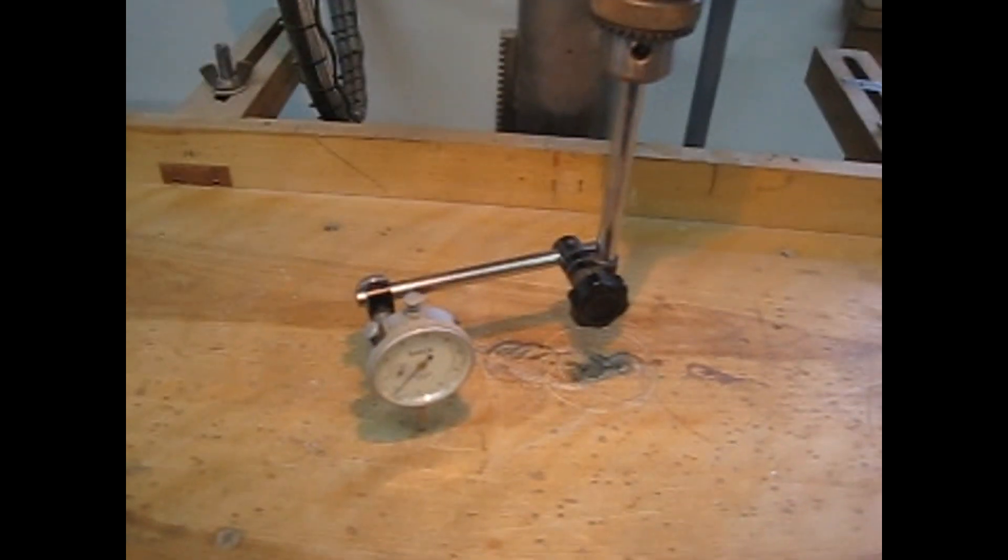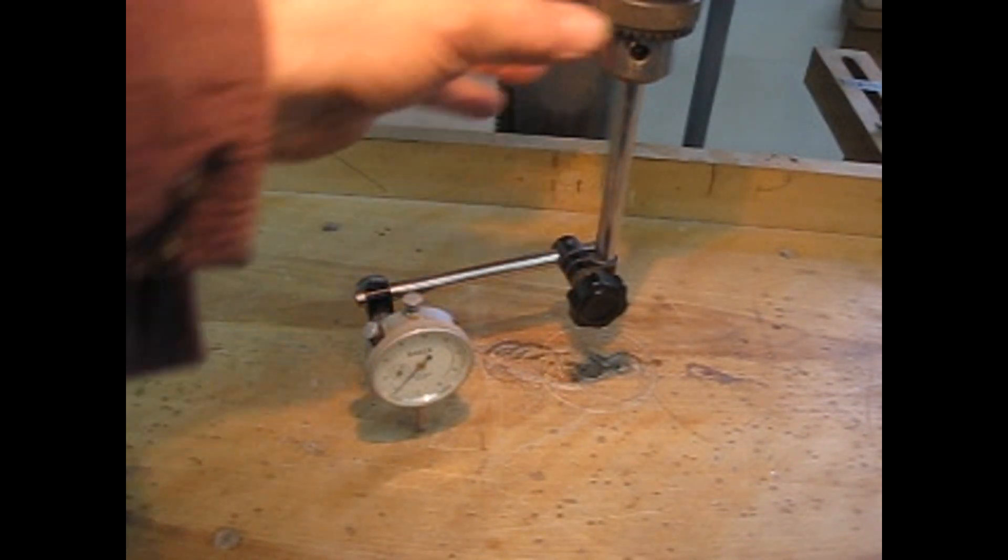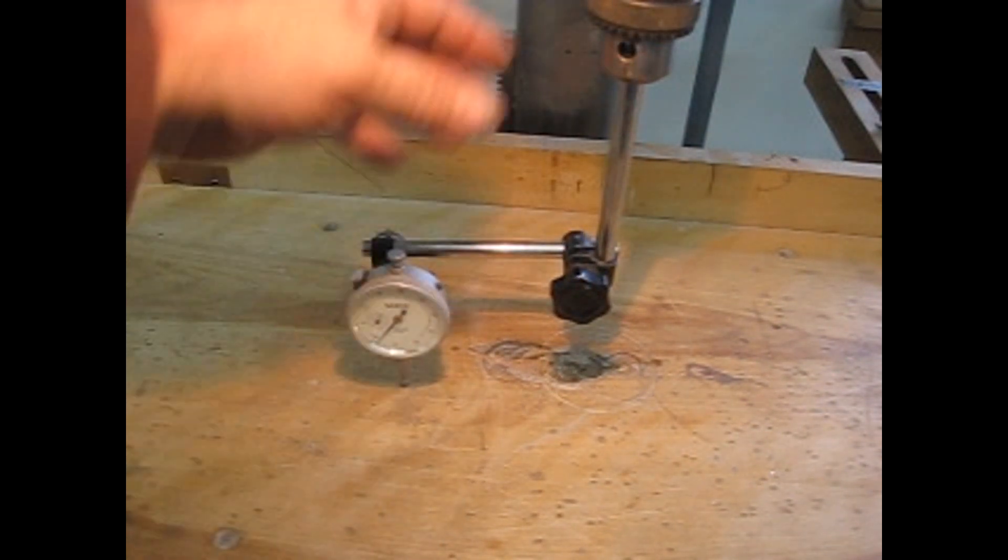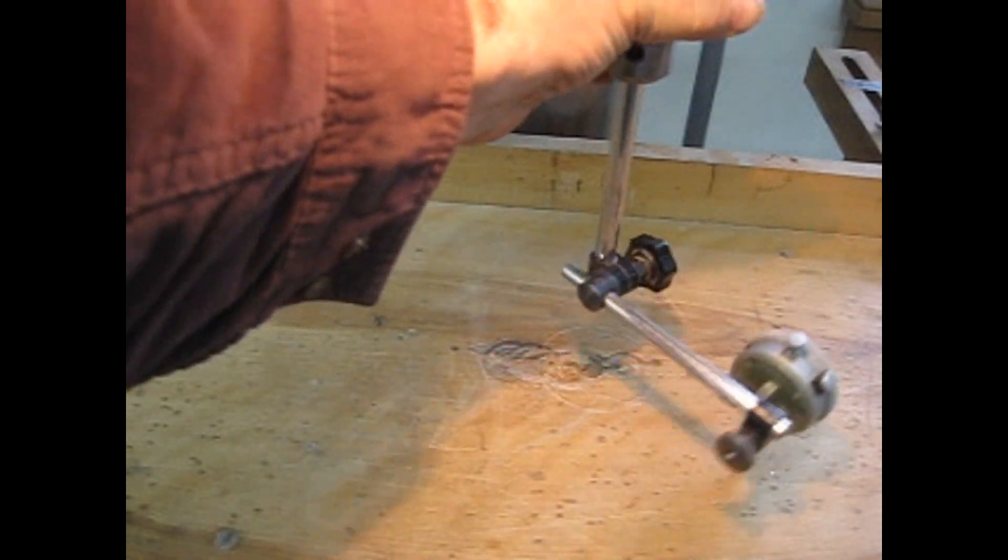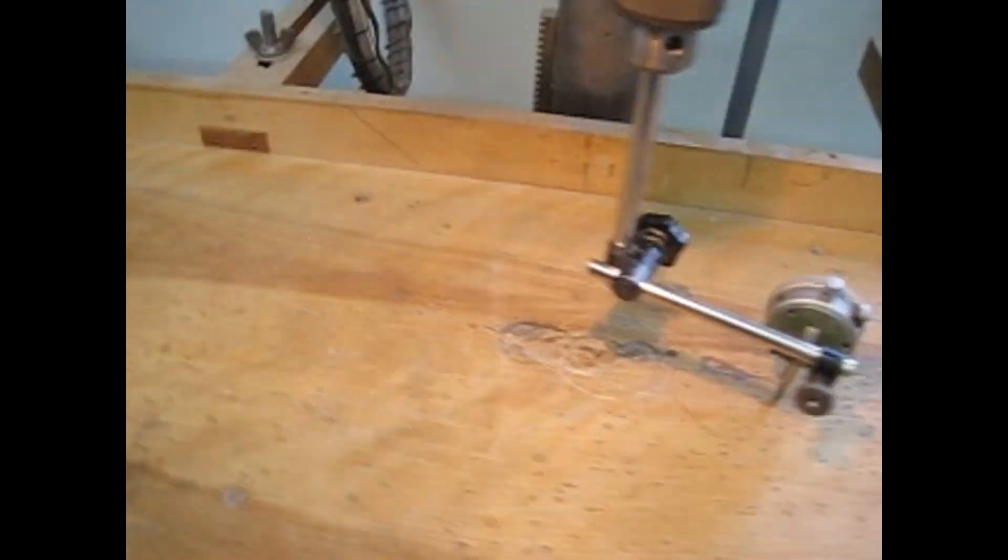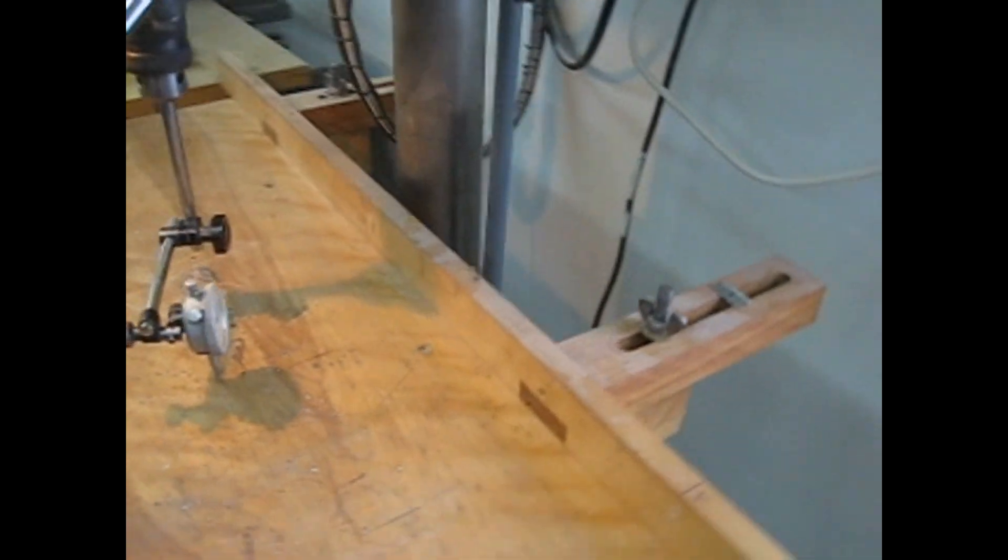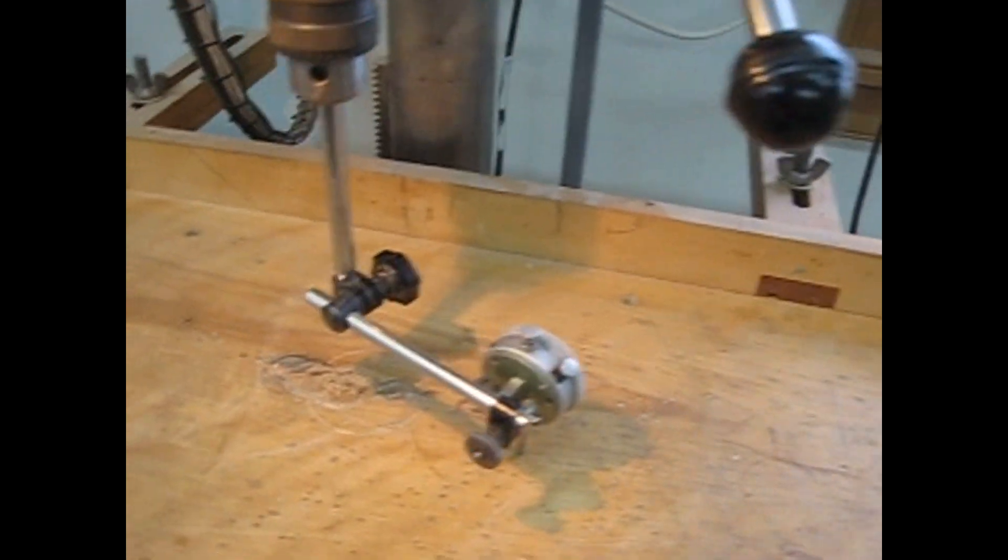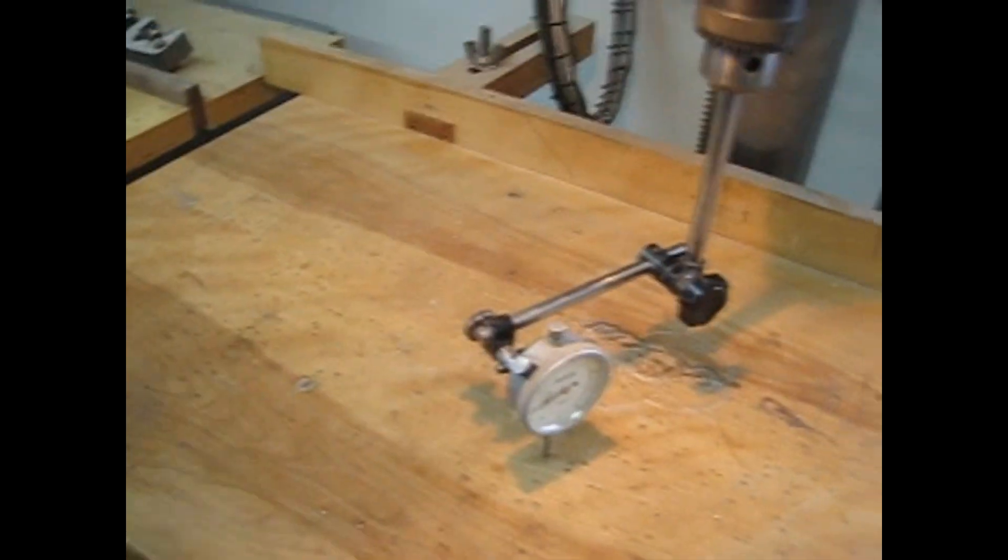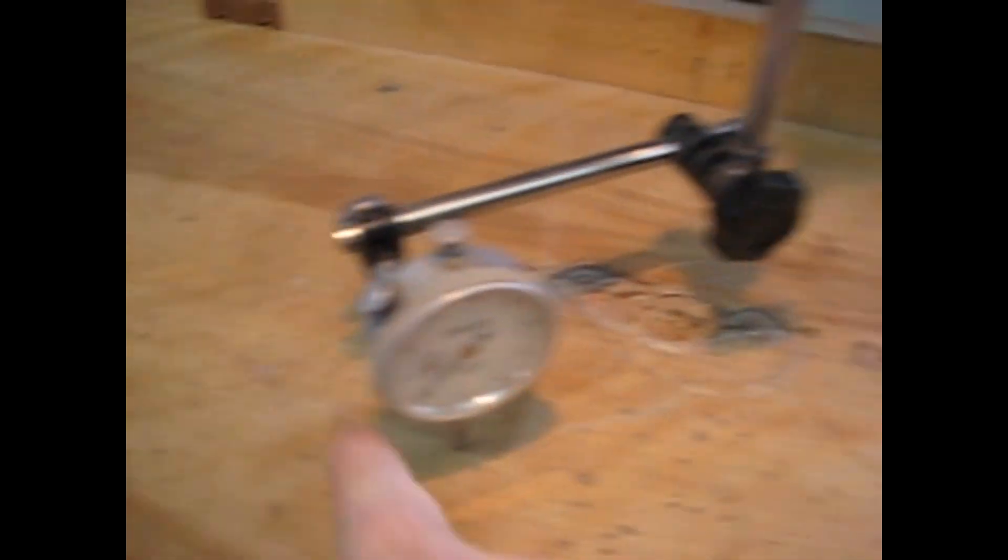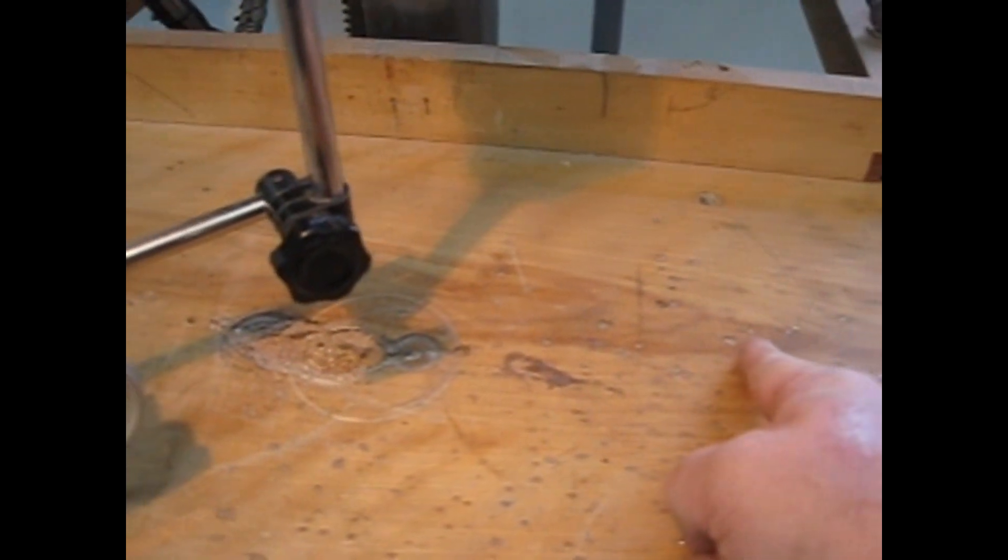This is how you check for 90. I'm reading here, it's minus three. I come around, and I read it there. Oh goodness, I'm out 30,000. When I used a square, it looked perfect to me. So from here to there, I'm out 30,000.